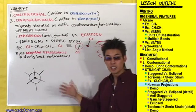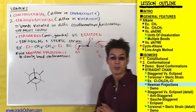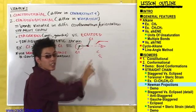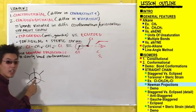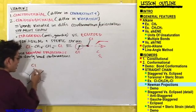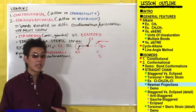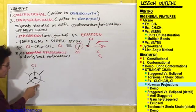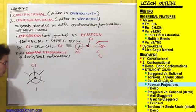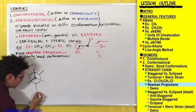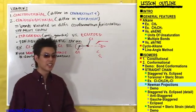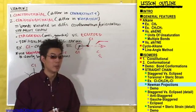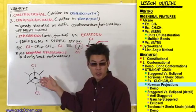To complete our Newman projection, let's fill in the atoms connected to the front and back carbon. On this front carbon, we have a chlorine pointing in the upward direction, so I'll put a chlorine on the bond pointing up from the dot. We also have a chlorine bonded to the back carbon pointing down, so I'll put a chlorine on the bond pointing down from the circle.